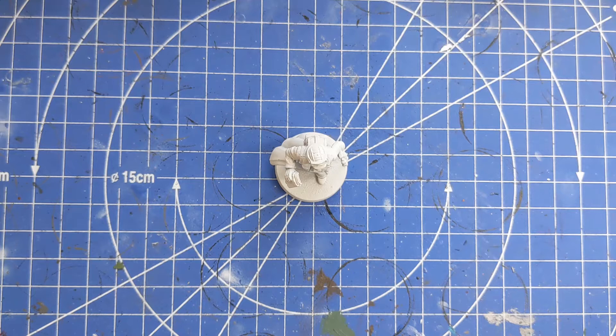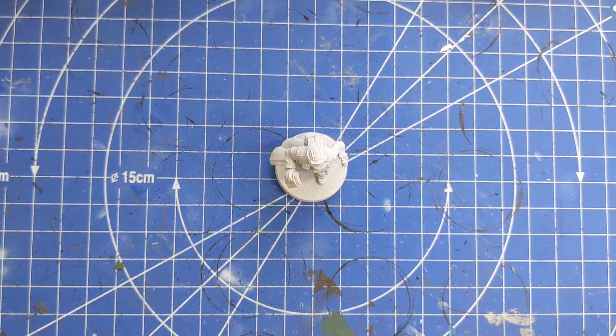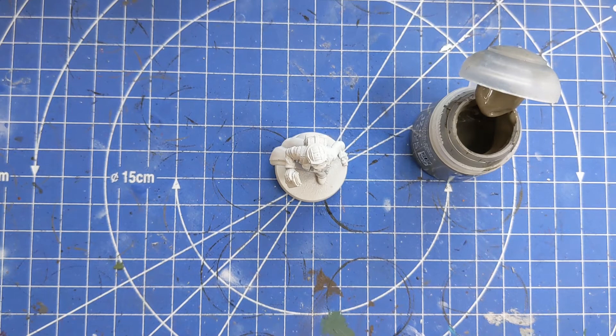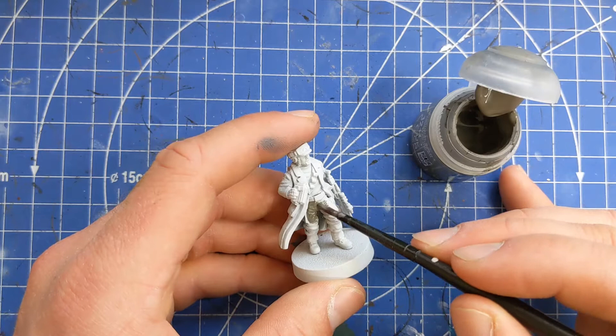Step number three we're going to look at the trousers first. For this I'm going to grab Storm Vermin Fur and we're going to take a medium-sized brush, water it down just a touch, and then paint his trousers in this darkish grey.